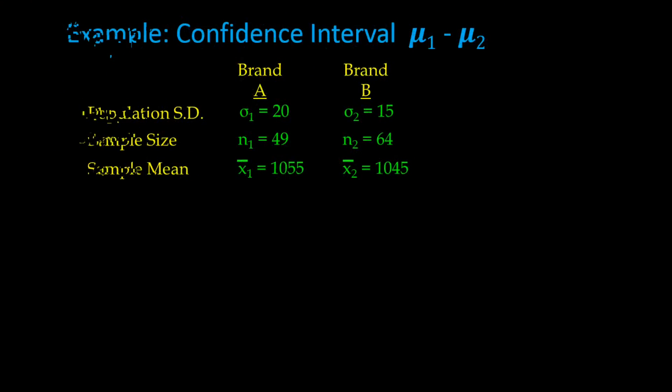Now let's try an example comparing the mean burn time of brand A and brand B lightbulbs. The population standard deviations are known: 20 hours for brand A and 15 hours for brand B. A sample of 49 lightbulbs is taken from brand A (n1) and 64 from brand B (n2). The sample mean burn time for brand A is 1,050 hours (x bar 1) and for brand B is 1,045 hours (x bar 2). The point estimate is 1,050 minus 1,045, which equals 10 hours.